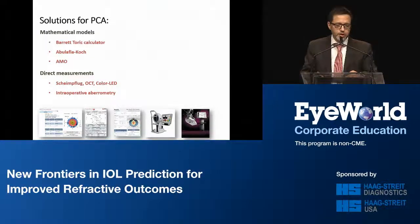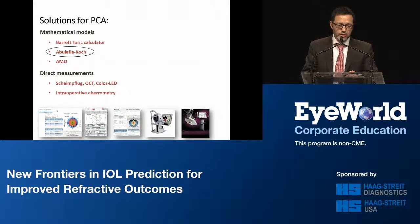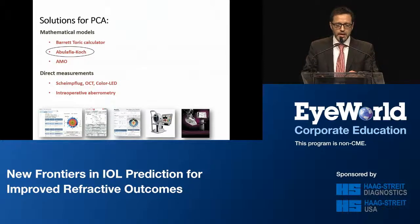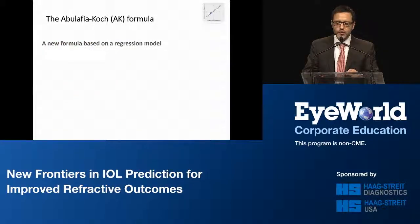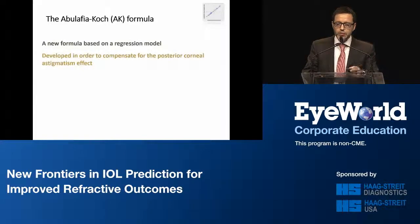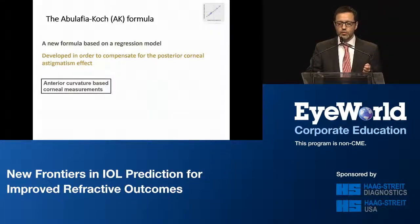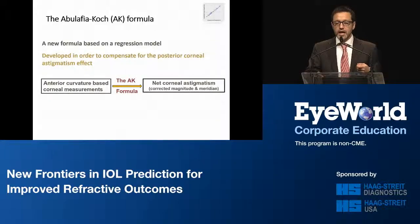We were very pleased when Warren Hill chose to use our method of calculation — the Abu-Lafia Koch formula — to be incorporated within the Hill RBF toric calculator. This is a new formula based on a regression model, developed to compensate for the posterior corneal astigmatism effect. What it does is take anterior curvature-based corneal measurements and calculate a new estimated net corneal astigmatism with a new magnitude and a new meridian.